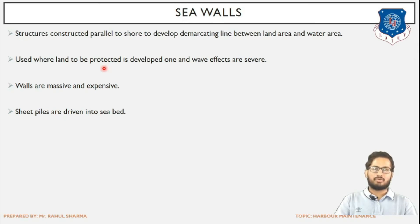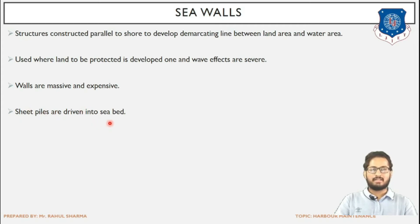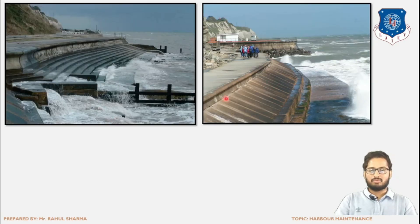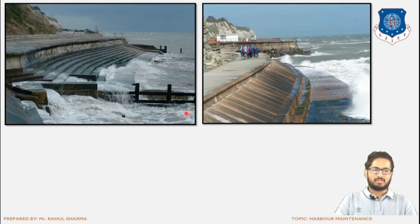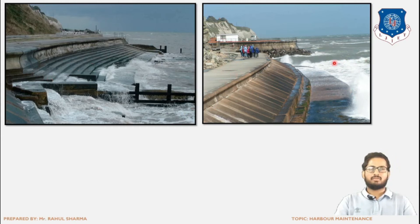Sea walls are used where the land is developed with human activity. The walls are massive and extensive. Sheet piles are driven into the seabed. This is the view of sea walls — this is the land portion and the water portion. The waves impart force on the sea wall. This is the land portion on one side, the water body on the other, and the sea wall is this stopping structure against which the waves impart their force.